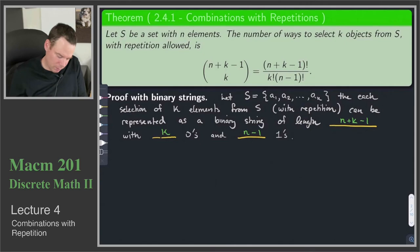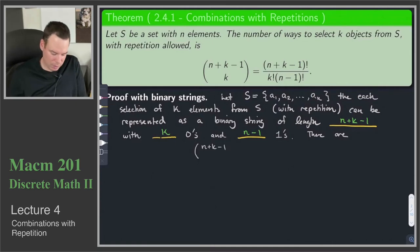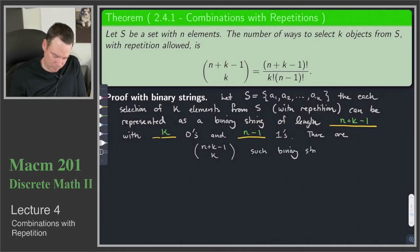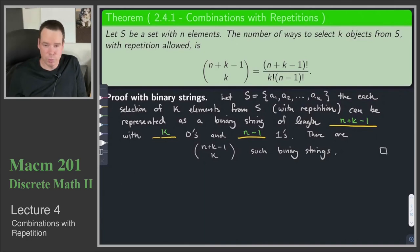The number of binary strings of length N + K − 1 with exactly K zeros is C(N+K−1, K). That's what we worked out in previous lectures, and so there we go — we've finished our proof. This is our proof of the number of combinations with repetition using the binary string encoding.